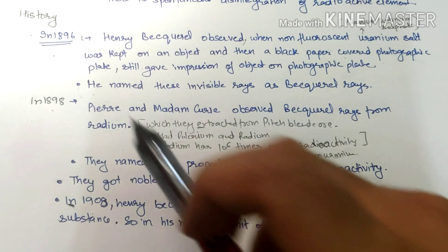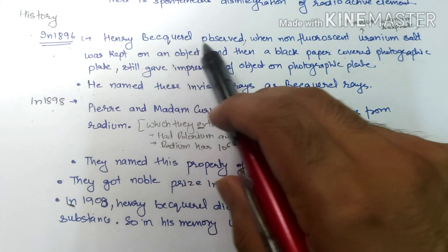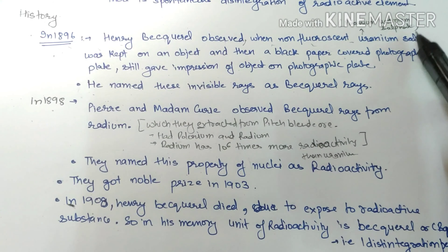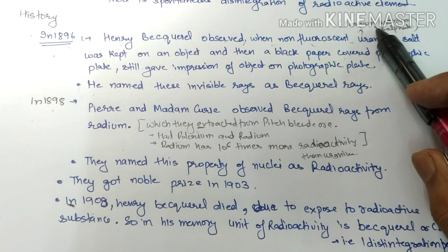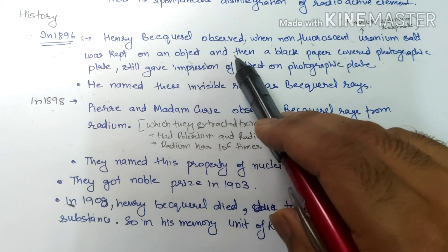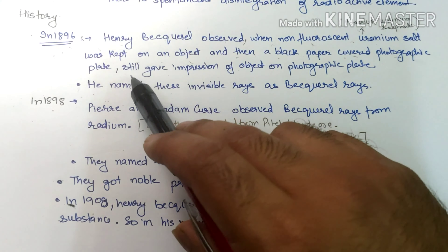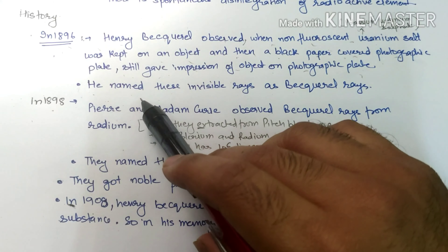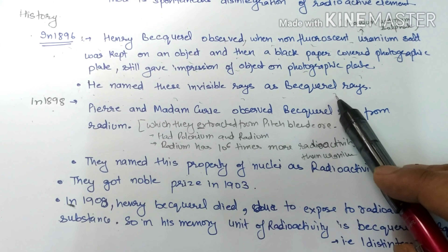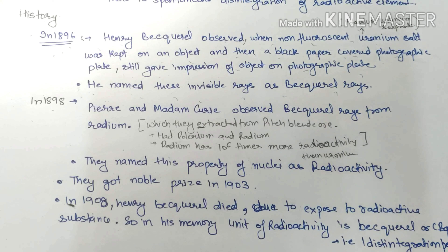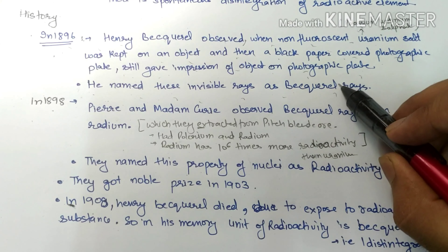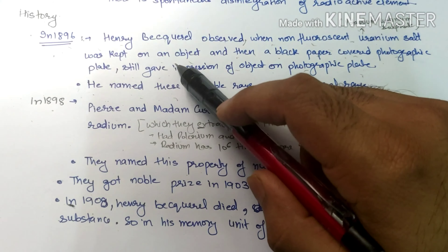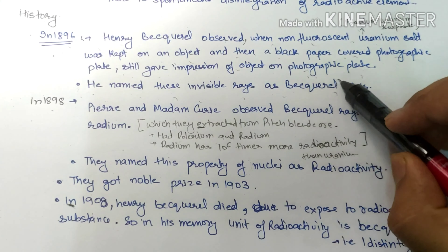History of Radioactivity: In 1896, Henry Becquerel observed that when a non-fluorescent uranium salt was kept on an object and a black paper-covered photographic plate was placed under it, it still gave an impression of the object on the photographic plate. He named these invisible rays as Becquerel rays. At that time, fluorescence and X-rays were observed when sunlight passed through a fluorescent material, emitting light observed on a photographic plate — but Becquerel was able to observe this activity without the use of sunlight.